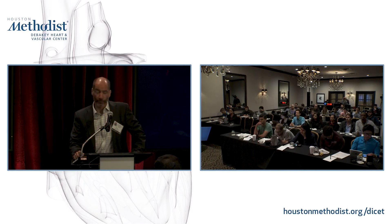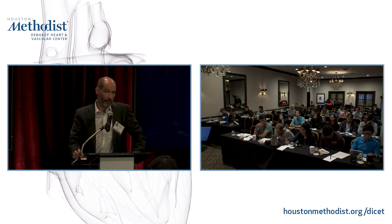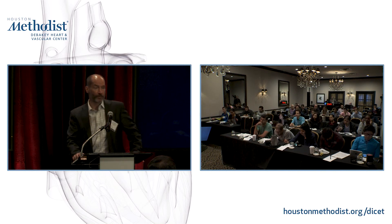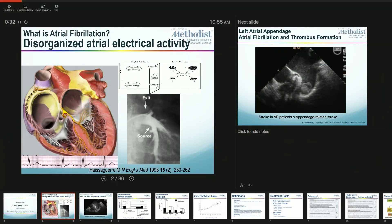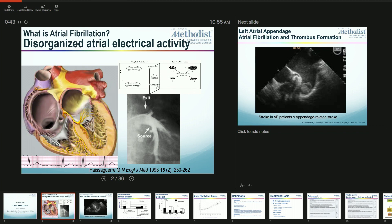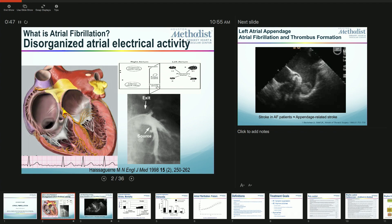It's important for you to know concepts of pharmacological management, have an idea of what we do when we ablate AFib, but also very importantly how we manage stroke protection in AFib. In 1998, a group in France took patients with paroxysmal AFib and tried to map the first beat that triggered AFib. They found that the vast majority of initiating beats came from one of the pulmonary veins.